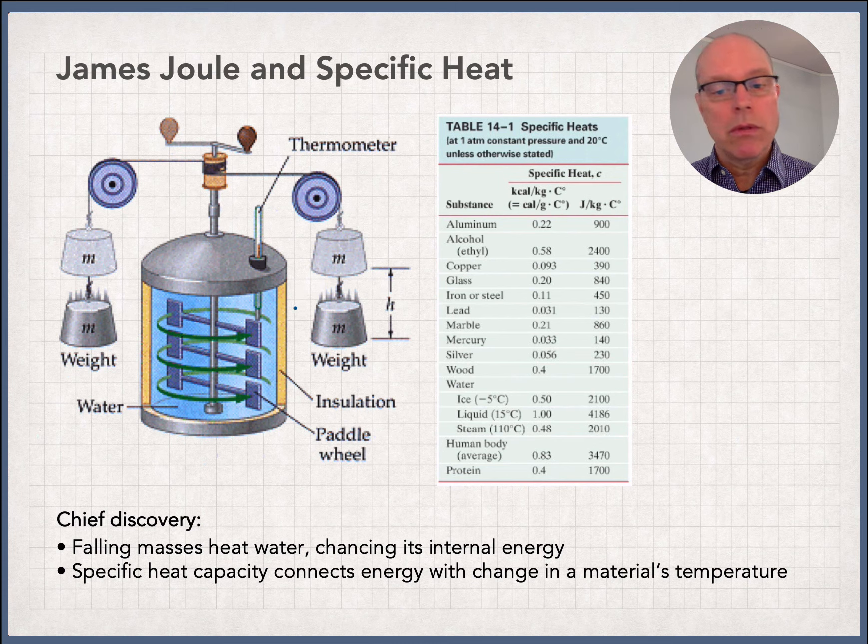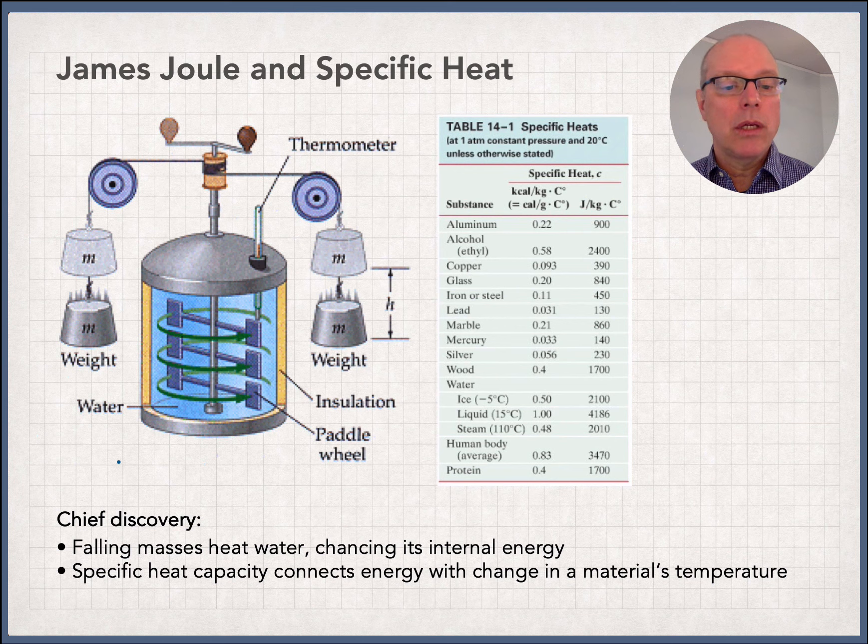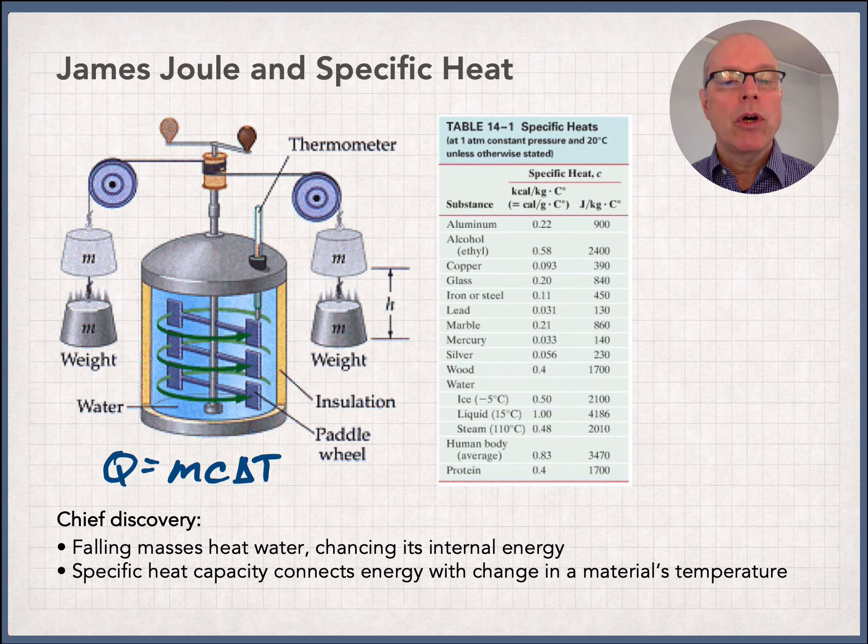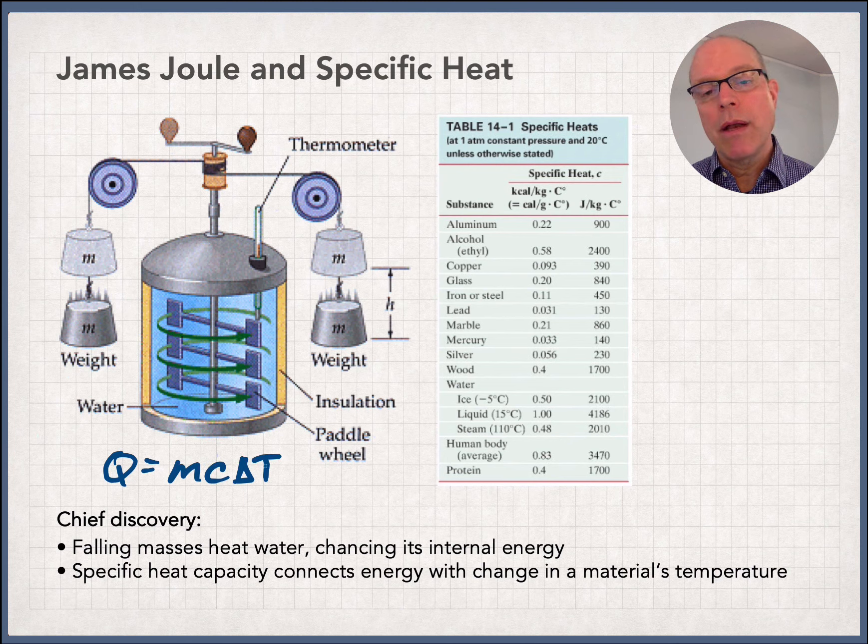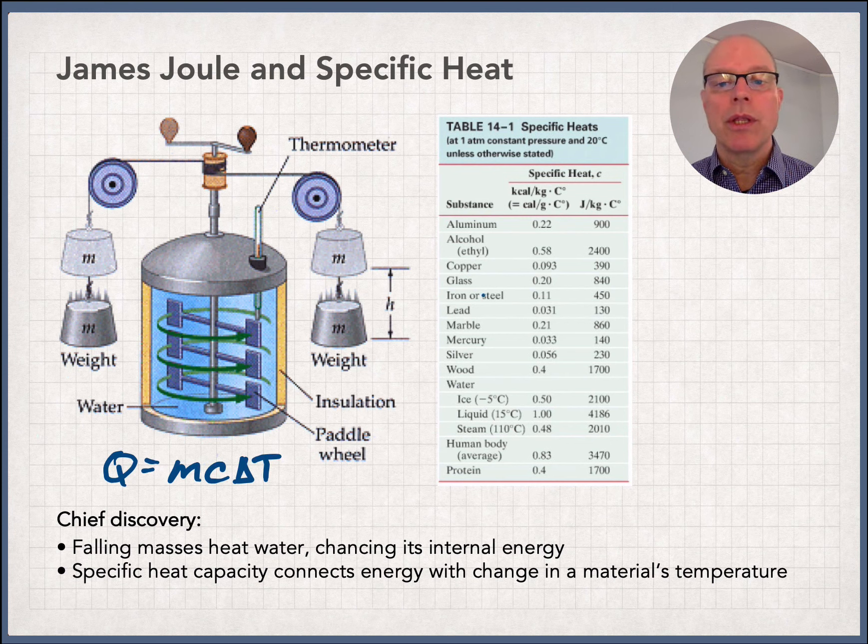And what he showed was that the increase of temperature, the increase of heat energy inside the water was proportional to the amount of work that he did with it. And he did experiments that were long running, consistent, and he came up with what we know as Q equals MC delta T, which is the cornerstone formula in what we call calorimetry. M is the mass of the water, delta T is the amount of temperature increase, Q is the amount of work or energy you dump into the water.